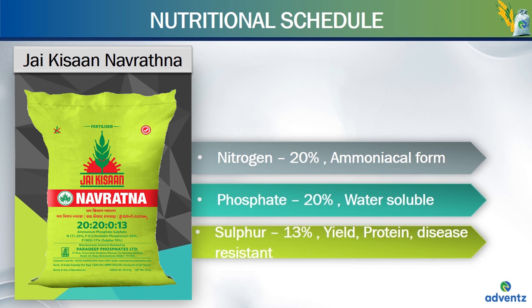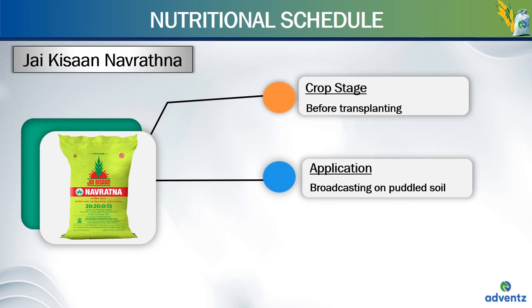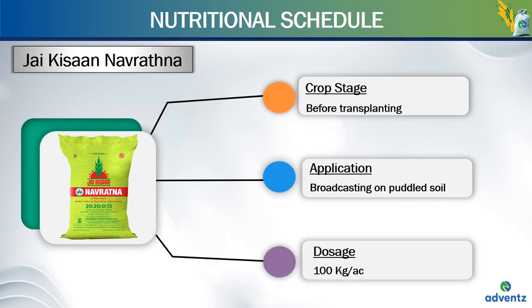Sulfur helps in improving yields and protein content of grain. It also hastens crop maturity while reducing soil alkalinity and builds disease resistance. Uniform, free-flowing granules facilitate easy application. Navratna is available in 50 kgs bags. The crop stage of Navratna is before transplanting; it is applied through broadcasting on puddled soil at a dosage of 100 kgs per acre.